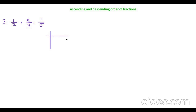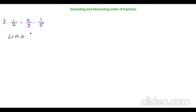Let me directly find the LCM using the prime factorization method, just for a revision. We have to find the LCM of 2, 3, and 5. As you can see, all these are different numbers and we don't have anything common. So when we can't find a common divisor, we multiply the denominators. The LCM of 2, 3, and 5 is 30.